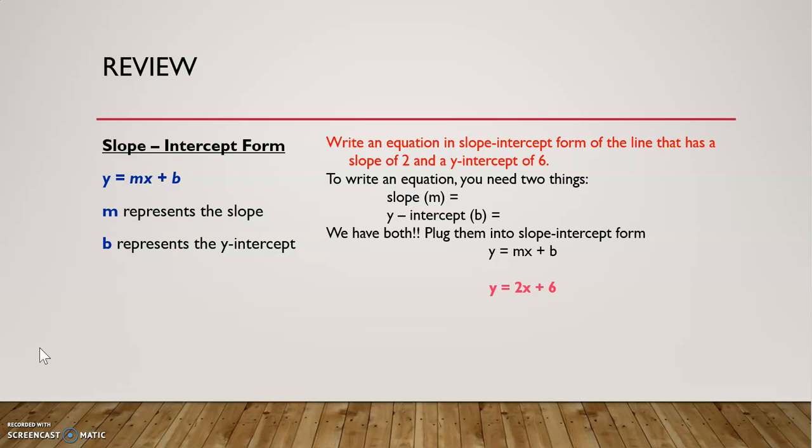So let's review what slope-intercept form is. We know that equations in slope-intercept form are written as y equals mx plus b. m represents the slope. The slope is the rate of change. It tells us how y moves compared to x.